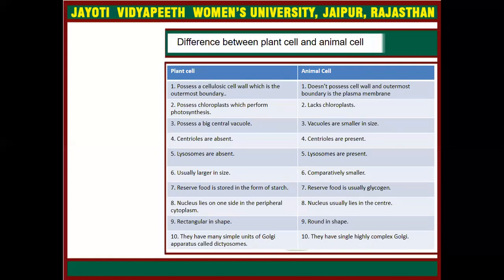The plant cell does not have centrioles, but animal cells have centrioles. Chromosomes or the nuclear part which is absent in plant cells. Lysosomes are absent in plant cells but animal cells have lysosomes, which have an important role in the cell. Vacuoles in plant cells are larger in size, but animal cells have smaller vacuoles.